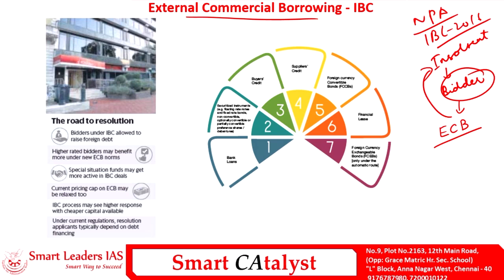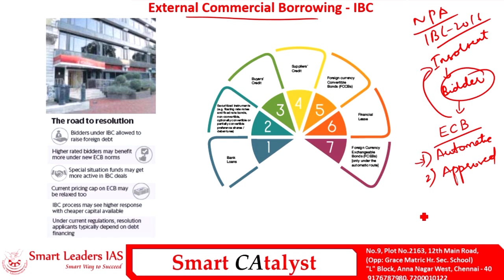ECB can be raised through two routes: the automatic route and the approved route. Up to a particular quantum of borrowing, companies can borrow under the automatic route. Beyond that quantum, or for companies critically important to national security or other factors, they must seek prior approval from RBI to avail ECB.